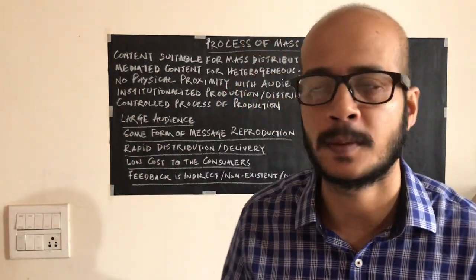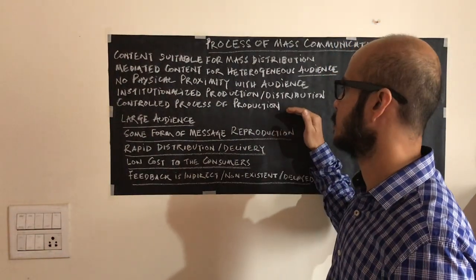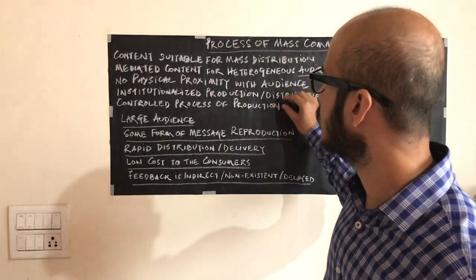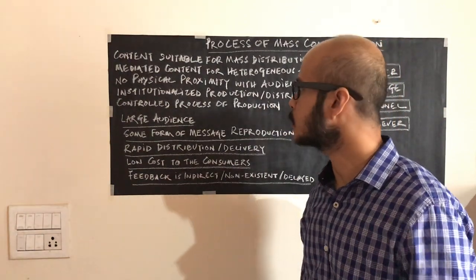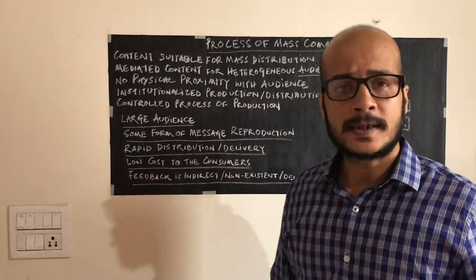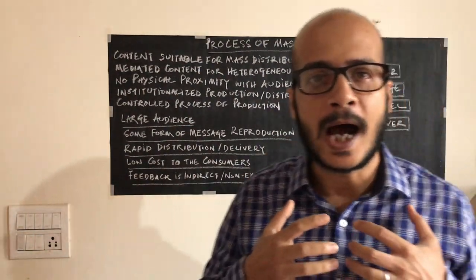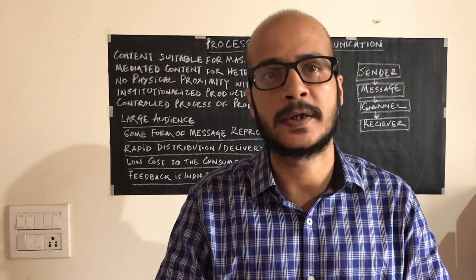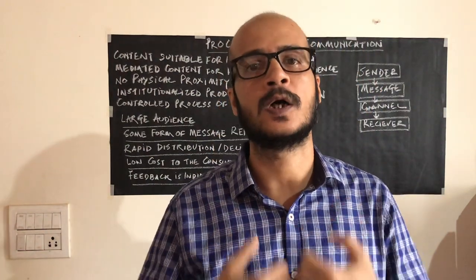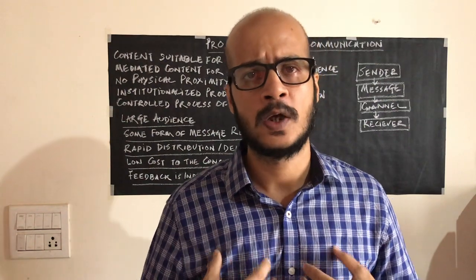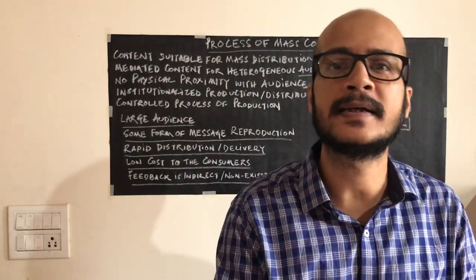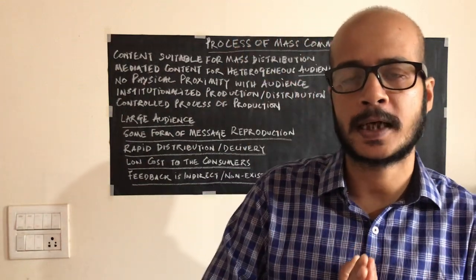Institutional production and distribution helps in propagating and spreading the message through mass communication. The fifth point is the controlled process of production. It is essential to control content because unless you have some control over it, it goes out there and people make different kinds of meanings from it. It is not practically possible to put out every kind of content, so the content has to be structured.